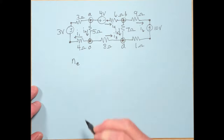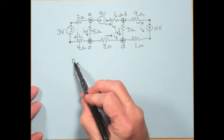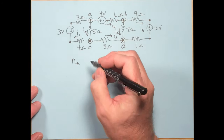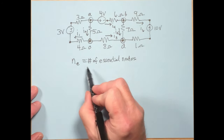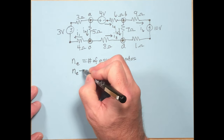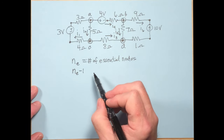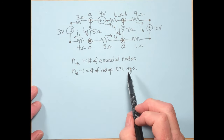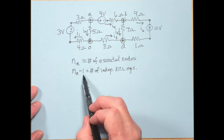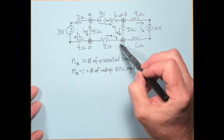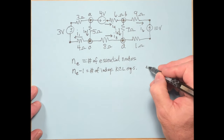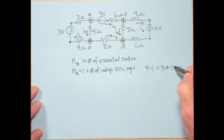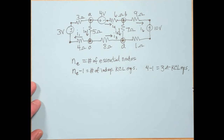Let N_E represent the number of essential nodes. The number of independent KCL equations you can write is N_E minus 1. With four essential nodes, that means 4 minus 1 = 3 independent KCL equations. You could write a KCL equation for nodes A, B, C, and D — but only three of those are independent. One would be derivable from the others.